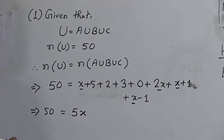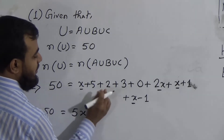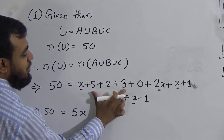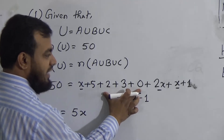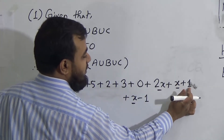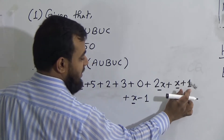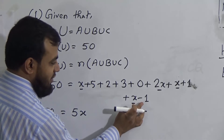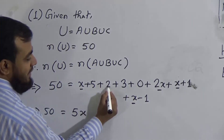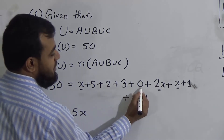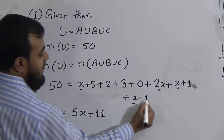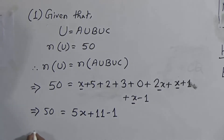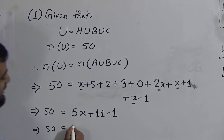So we get 50 = 5x + 11 − 1, which simplifies to 50 = 5x + 10. To omit the 10 from the right side, we subtract 10 from both sides: 50 − 10 = 5x + 10 − 10, giving us 40 = 5x.